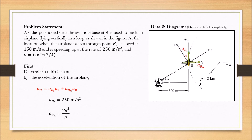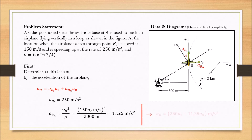Putting the values of V_B and rho, we can obtain the acceleration of the airplane at point B in the normal direction, which is 11.25 meters per second squared. In vector form, the acceleration at B is: A_B equals 250 U_T plus 11.25 U_N meters per second squared.